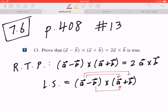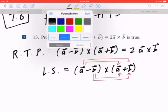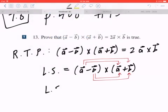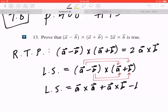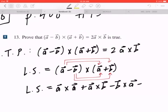I advocate the arrows - you can use them at any given time. When you expand this, the left hand side equals a cross a plus a cross b minus b cross a minus b cross b.